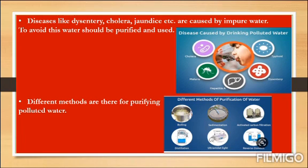These are the causes of water pollution. Because of impure water, diseases like dysentery, cholera, and jaundice can happen. To avoid this, water should be purified and used. There are different methods for purifying polluted water — now let's see what those methods are.